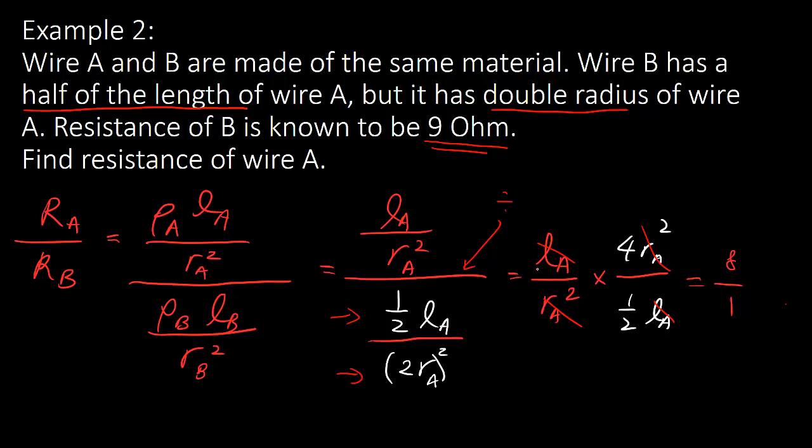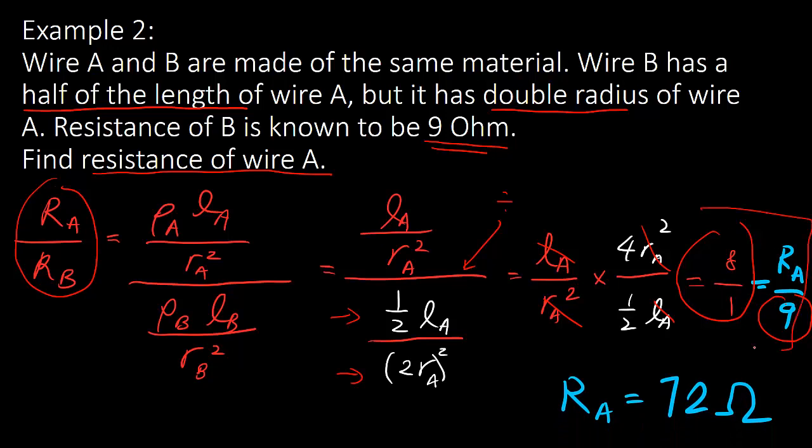And eventually you find 8 over 1. And don't forget your question asks you to find resistance of A. And therefore, by looking at what you have at the beginning and what you have now, and, well, R B is actually known to be 9. And therefore, R A by looking at, you know, this equation, then you'll find R A will be 72 ohm.